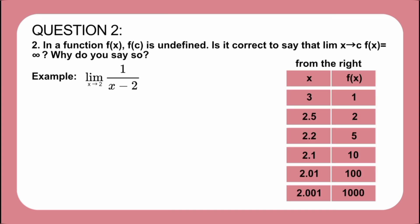From the right, our x values are 3, 2.5, 2.2, 2.1, 2.01, and 2.001. Substituting these into our equation, for x equal to 3 we get 1, for 2.5 we get 2, for 2.2 we get 5, for 2.1 we get 10, for 2.01 we get 100, and for 2.001 we get positive 1000.